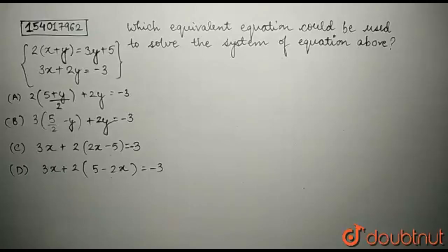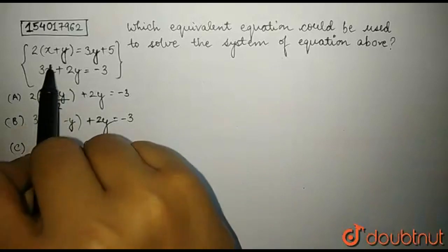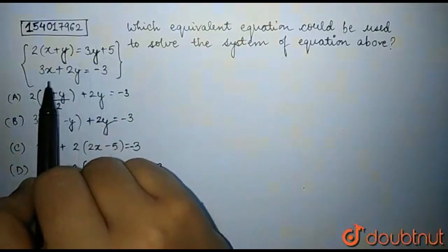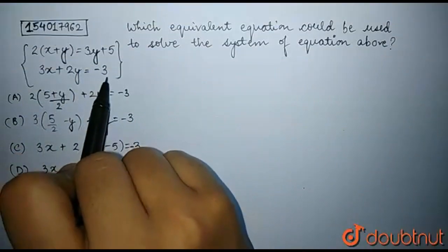Hello guys, this is a question from SAT. 2 times x plus y is equal to 3y plus 5, and 3x plus 2y is equal to minus 3.